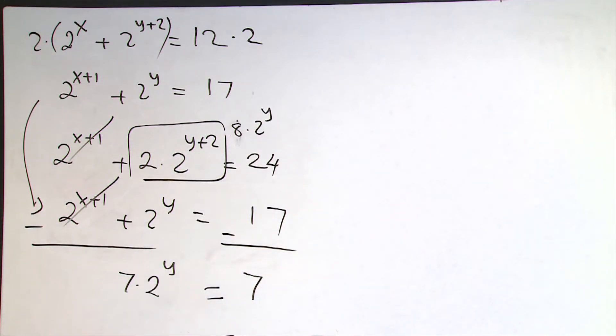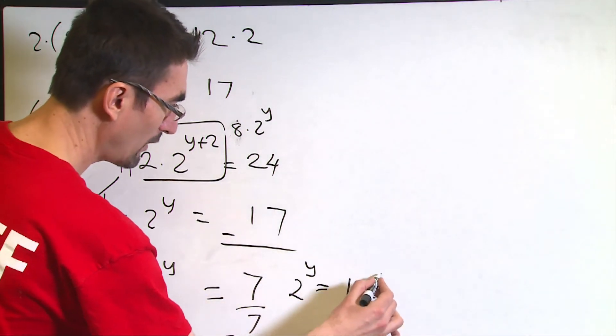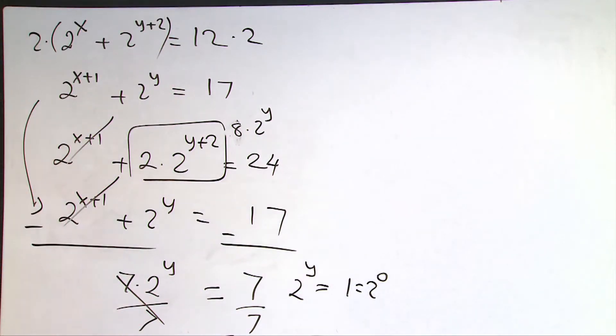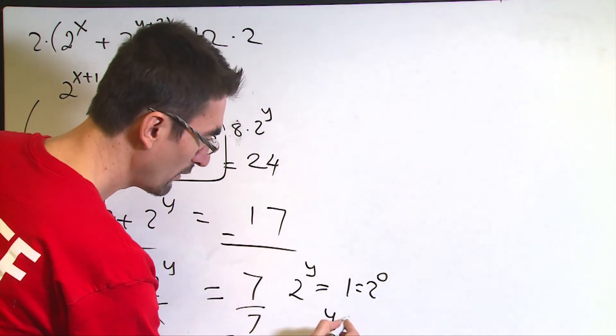Alright, we got rid of the expression 2 to the power x, left with only 2 to the power y. If I divide each side by 7, then I will get 2 to the power y equals 1, which is 2 to the power 0. Remember, any number to the power of 0 equals 1. Since the bases are the same, this gives me y equals 0.